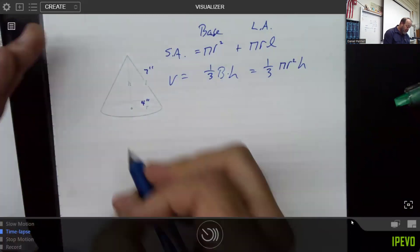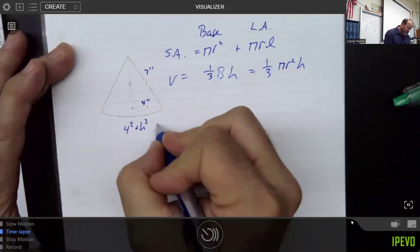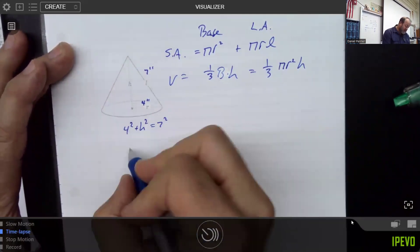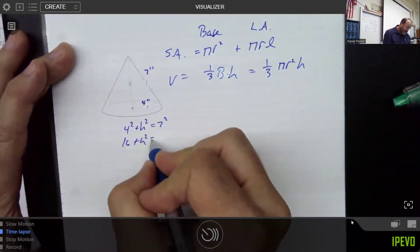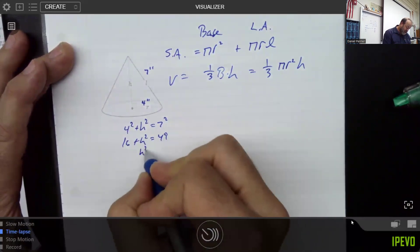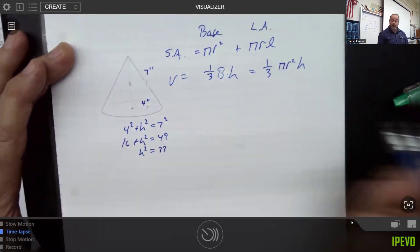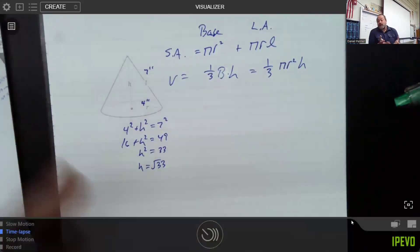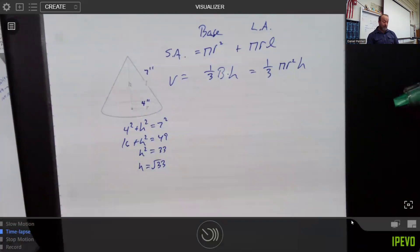We could use the Pythagorean theorem to say that four squared plus H squared is seven squared. We're looking at 16 and 49. So we have H squared is 33. So H is the square root of 33. Now, that's not a nice number, but that's pretty typical for these kinds of problems.